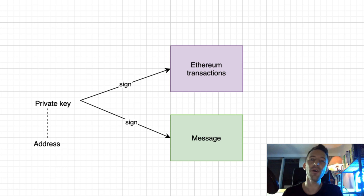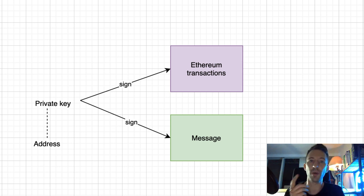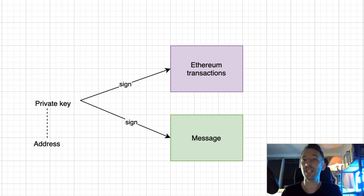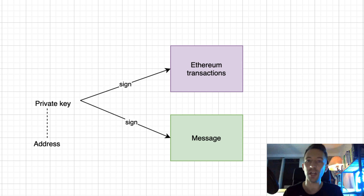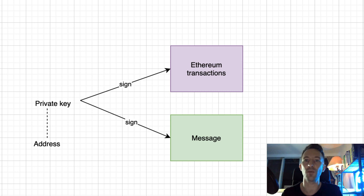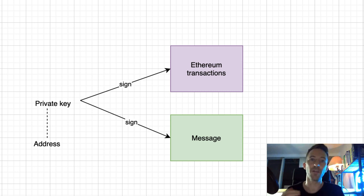If you have a private key, you can use it to sign Ethereum transactions. But what most people don't know is that you can also use this private key to sign any arbitrary message, not just Ethereum transactions. And later, anyone can verify that the message was signed with the address of that private key.